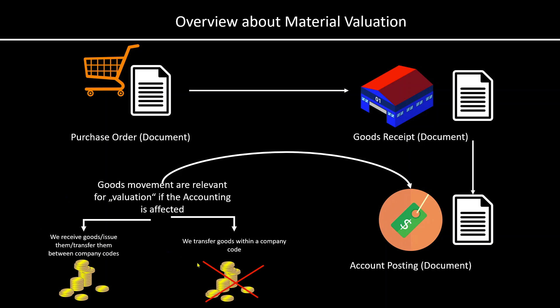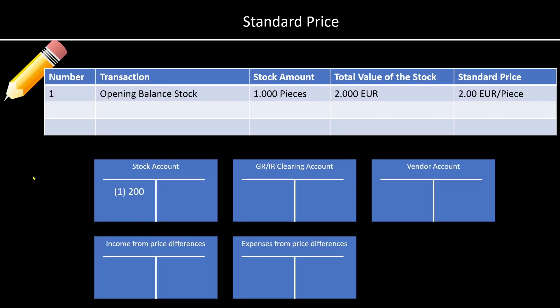Goods are normally not subject to value tracking when we transfer them within the company code, which is called intra-stock transfer. With that said, let's now look at the two types of prices we can set for our goods.